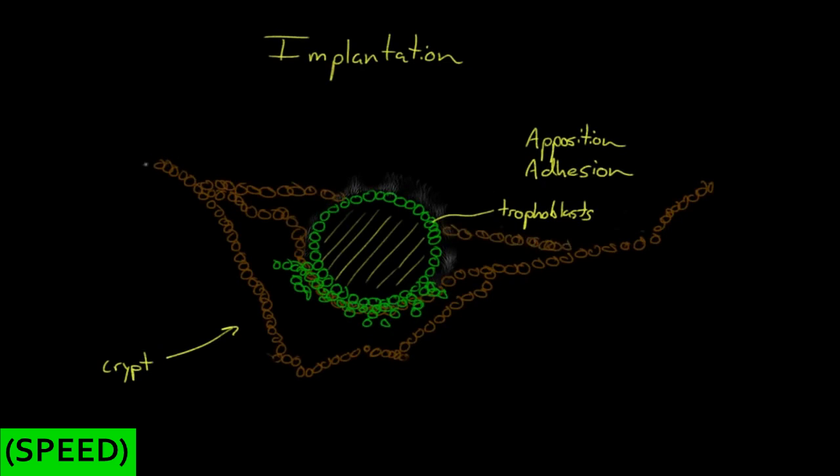But the uterine endometrial cells aren't sitting still either. They continue to divide. They get larger and larger. And pretty soon, you're entirely embedded within the endometrium.